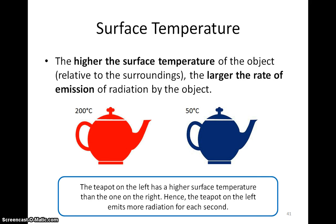Surface temperature. The higher the temperature of the object relative to its surroundings, the larger the rate of emission of radiation by the object. For example, the teapot on the left has a higher surface temperature than the one on the right. Hence, the teapot on the left emits more radiation each second.